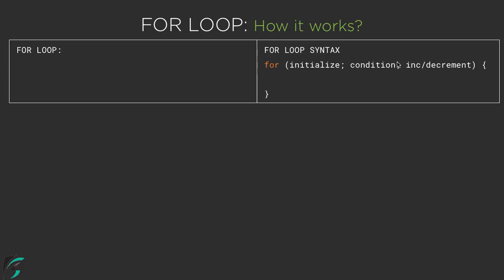These two semicolons are compulsory for any for loop. The first one is 'initialize', the second one is 'condition', and the third one is 'increment or decrement of the counter'. Inside the body of the for loop, we simply put our code — whatever operation we want to perform, we perform it inside the for loop.